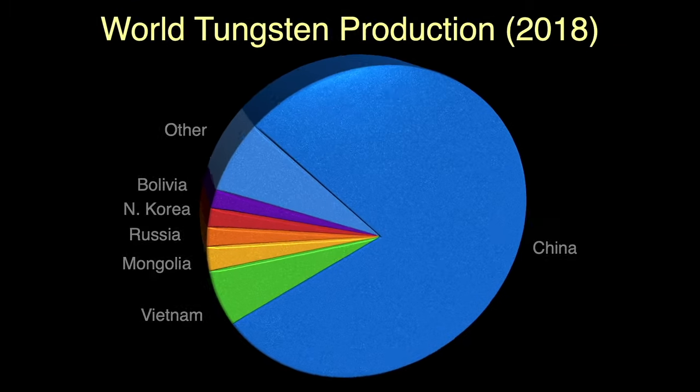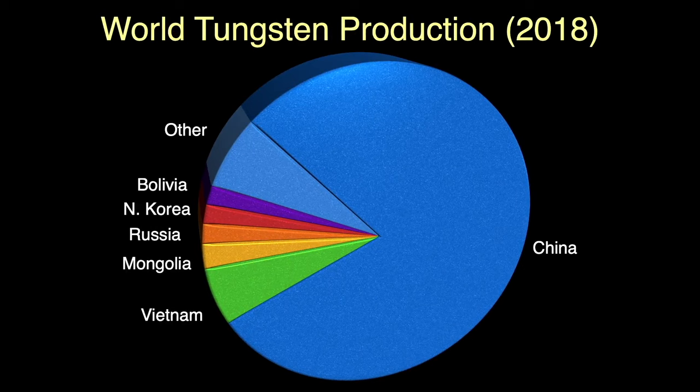Most of the world's tungsten is mined in China, which supplies 80% of the global need. Other sources are Vietnam with 6%, Mongolia, Russia, North Korea, and Bolivia, all with around 2%, and everybody else combined makes up the remaining 6%.